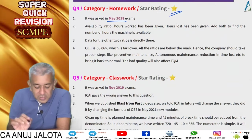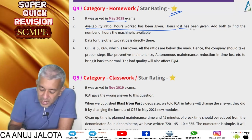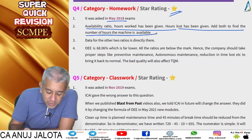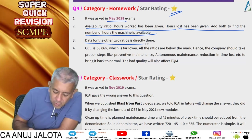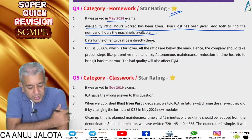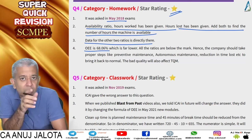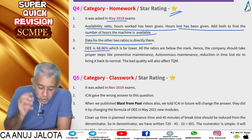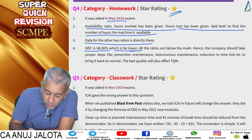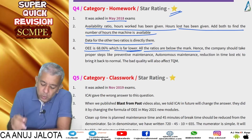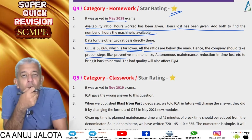For the availability ratio, add hours worked and hours lost to get total hours available. The data for the other two ratios is directly given. OEE comes to 68.06%. Remember: OEE is the multiplication of availability ratio, performance ratio, and quality ratio. The quality ratio is far lower than the standard.